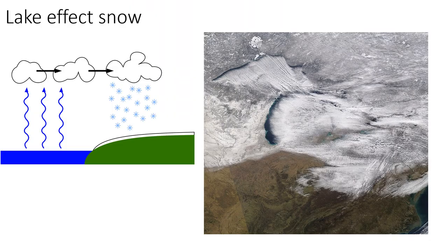Another example of the interaction of land with water happens in the winter: lake effect snow. Lake effect snow happens when very cold air moves over warmer lake water. Moisture gets picked up as that really cold air moves over the lake — moisture comes up from the warmer lake. That moves over land and results in dumping of huge amounts of snow, because that cold air has picked up moist air over the lake and dumps it onto the land.